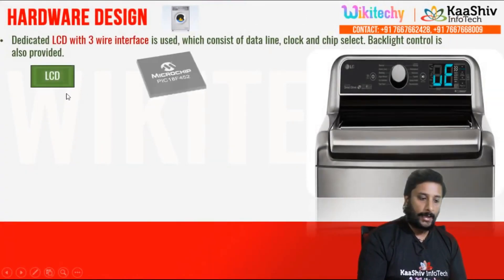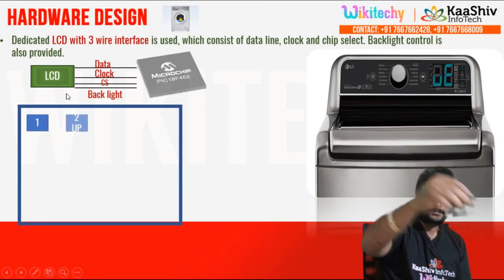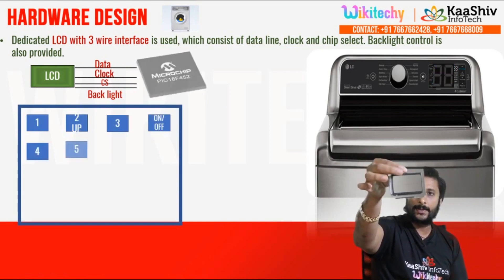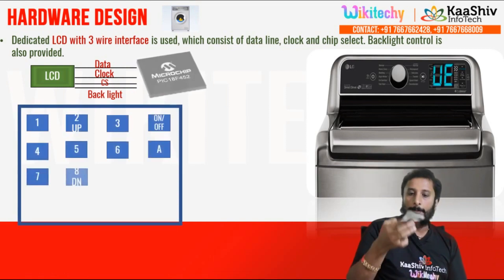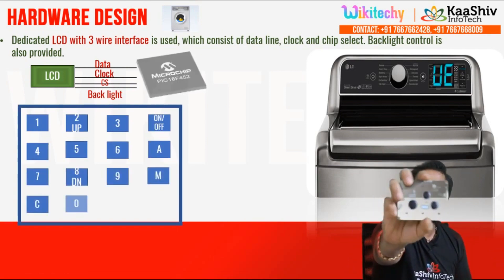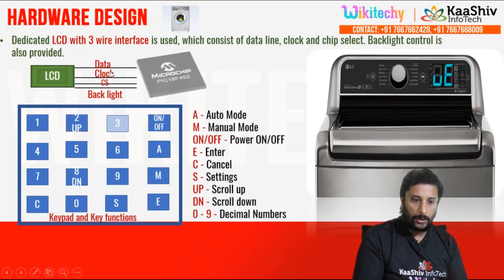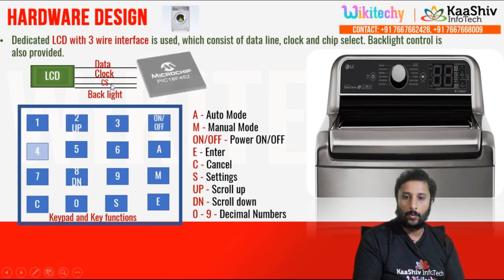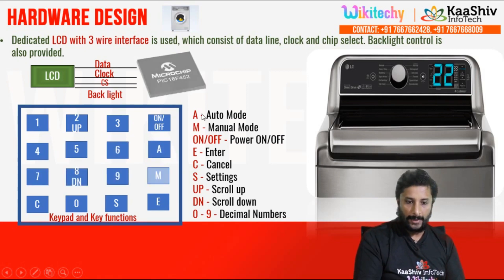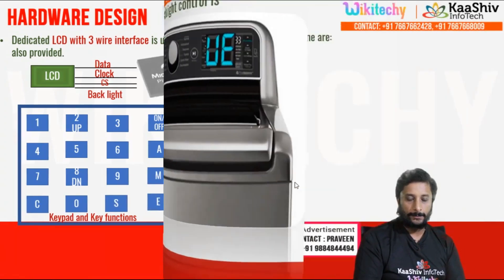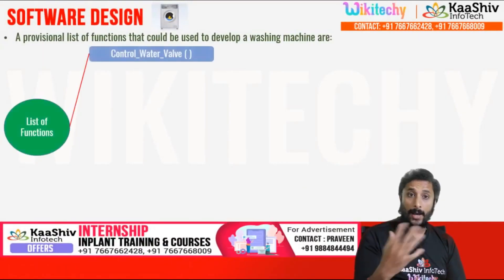This is the LCD. This is the LCD. These are the 3 important pins. This is the clock. This is the CS backlight. This is the data line, clock line, and chip selector. This is the microcontroller. This is the keypad — these are the details. This will be the hardware design.